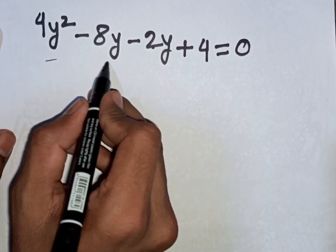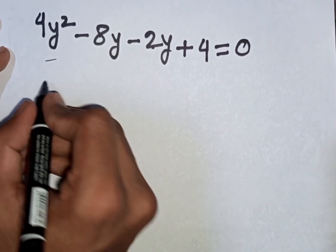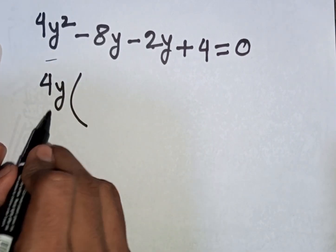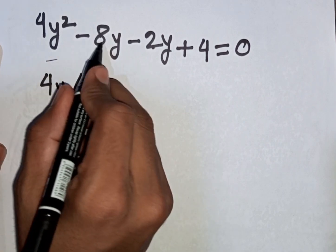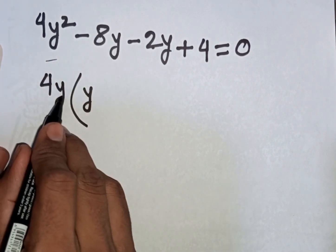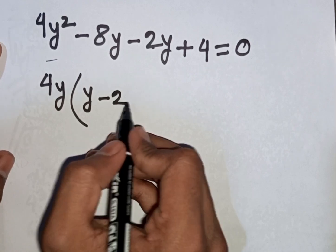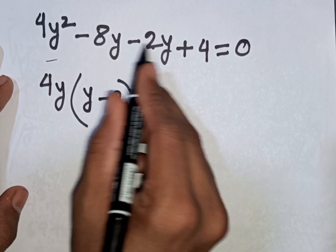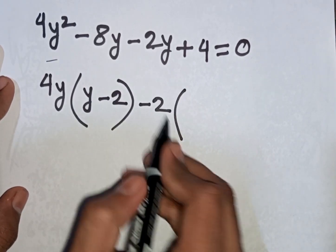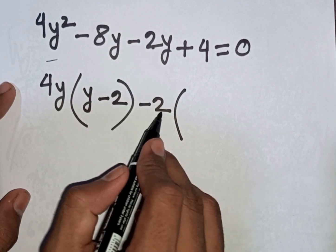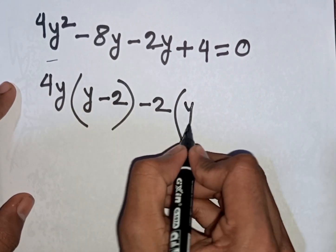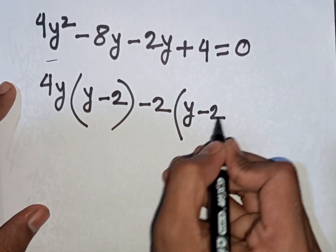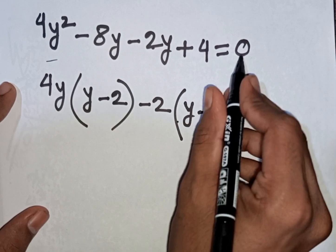Now we take common factors. From the first two terms, 4y is common: 4y(y minus 2). From the last two terms, negative 2 is common: minus 2(y minus 2). So the expression becomes (y minus 2)(4y minus 2) equals 0.